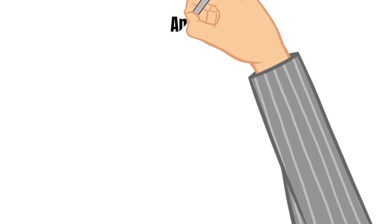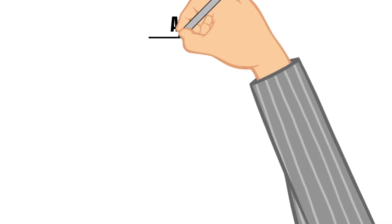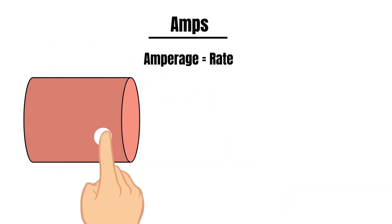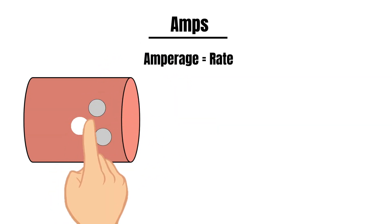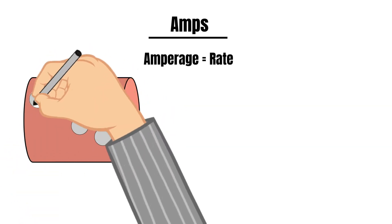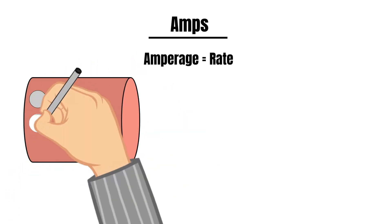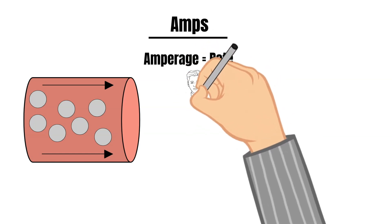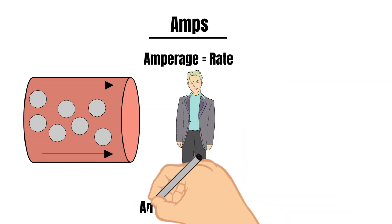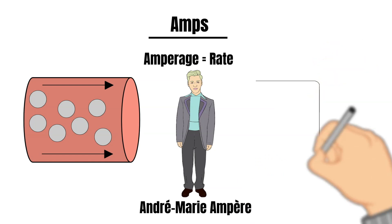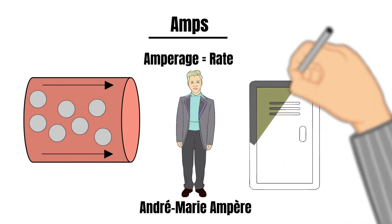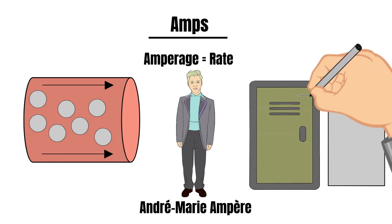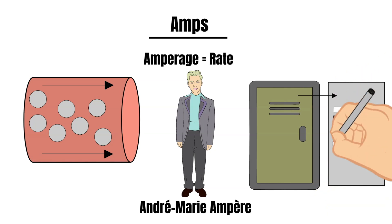The next measurement of electricity measures current, and this uses amps as the unit of measurement. Amperage — amps for short — is another way to measure the amount of electricity running through a circuit. It is the rate of electrons moving through the wire. This unit is named after French physicist André-Marie Ampère, one of the fathers of electromagnetism. You might come across amps if you look inside your home's service panel, also commonly called the breaker box, where you'll see circuit breakers listed as maybe 15 amps, 20 amps, or even up to 30 amps.